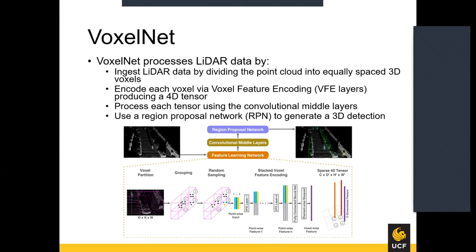VoxelNet was developed for 3D object detection. It does so by processing LiDAR data into equally spaced 3D voxels, where each voxel represents a group of points in the 3D space. Each voxel is then encoded using the voxel feature encoding layers and then passed to a group of convolutional layers prior to a region proposal network, which predicts our 3D bounding box.